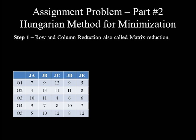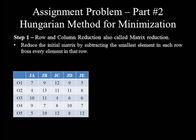This step itself has two sub-steps: row reduction followed by column reduction. In row reduction, we reduce the initial matrix by subtracting the smallest element in each row from every element in that row. Let's start by identifying the minimum value in each row.